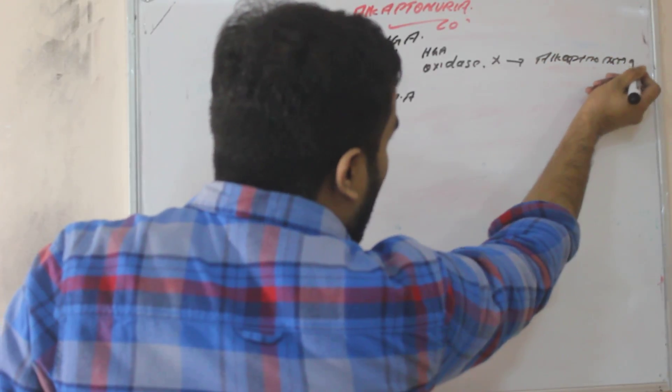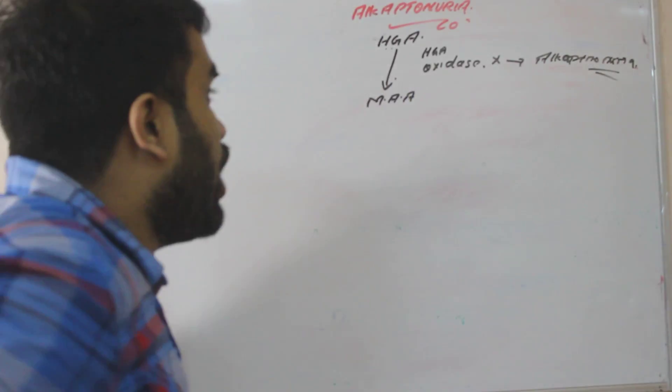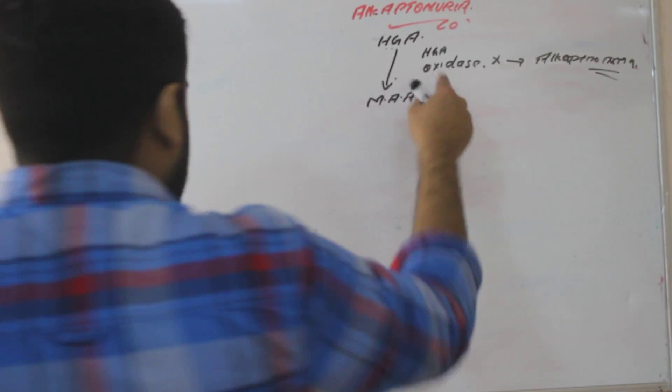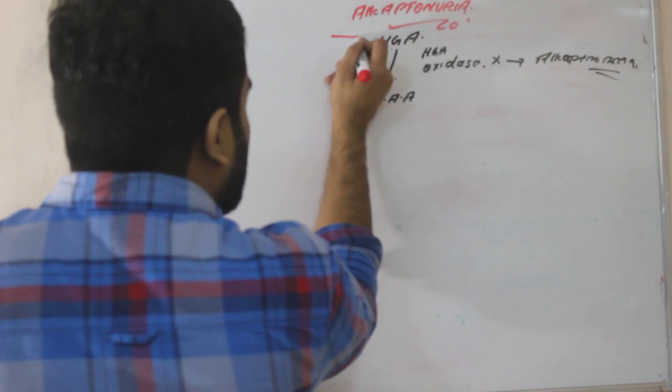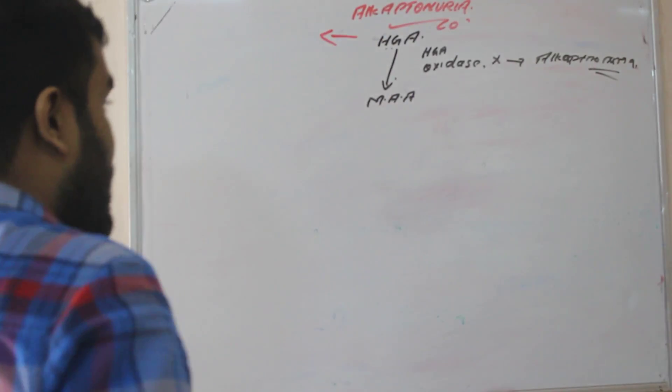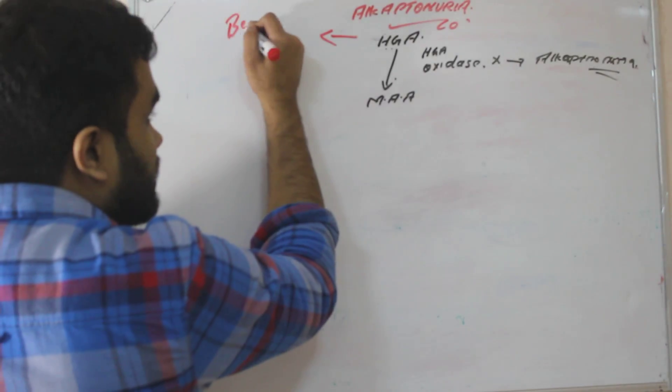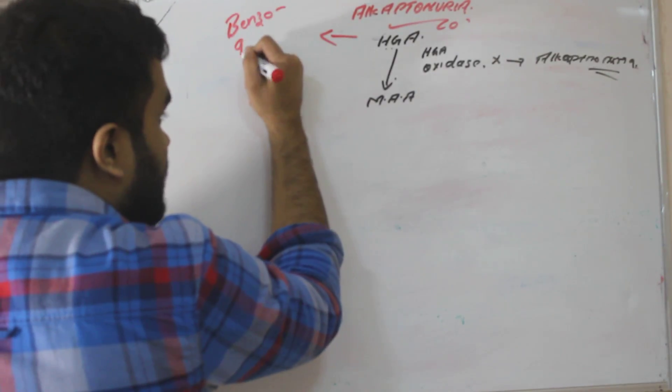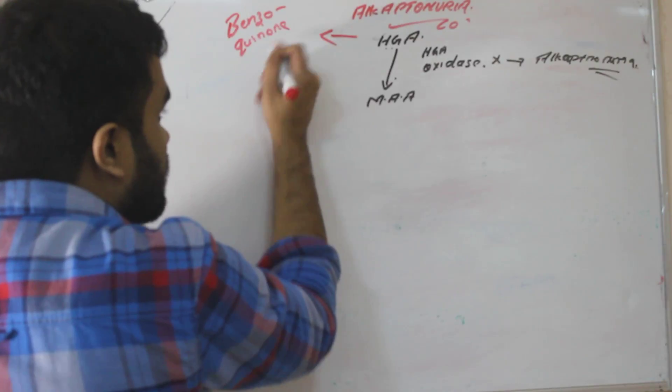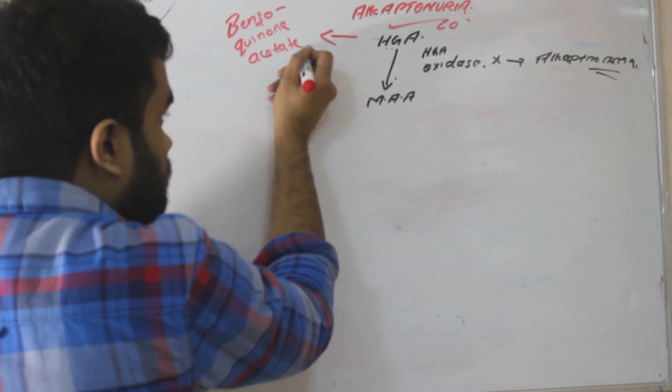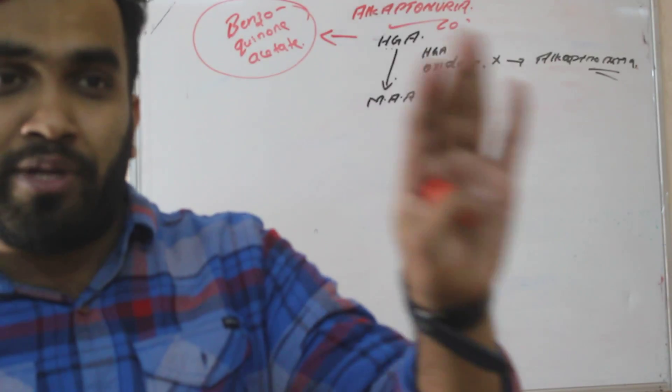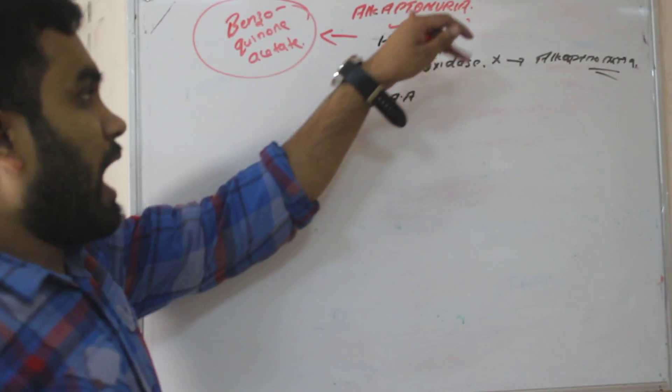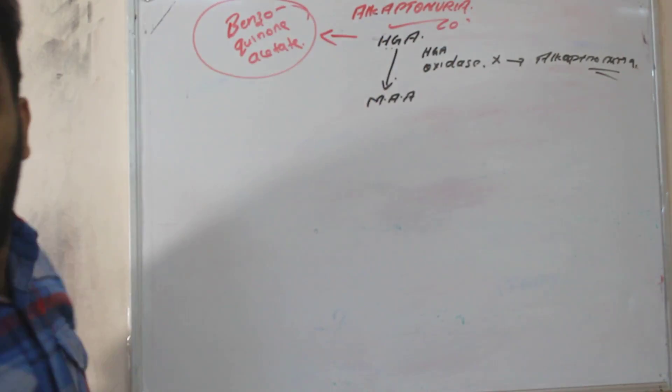From the word, alkaptonuria will be seen in the urine. Now if this enzyme is absent, this HGA will be accumulating. This HGA accumulating will form a toxic substance known as benzoquinone acetate. So five star question. Five star means it will come in your exam, every exam. So in alkaptonuria what you can see, there is benzoquinone acetate.